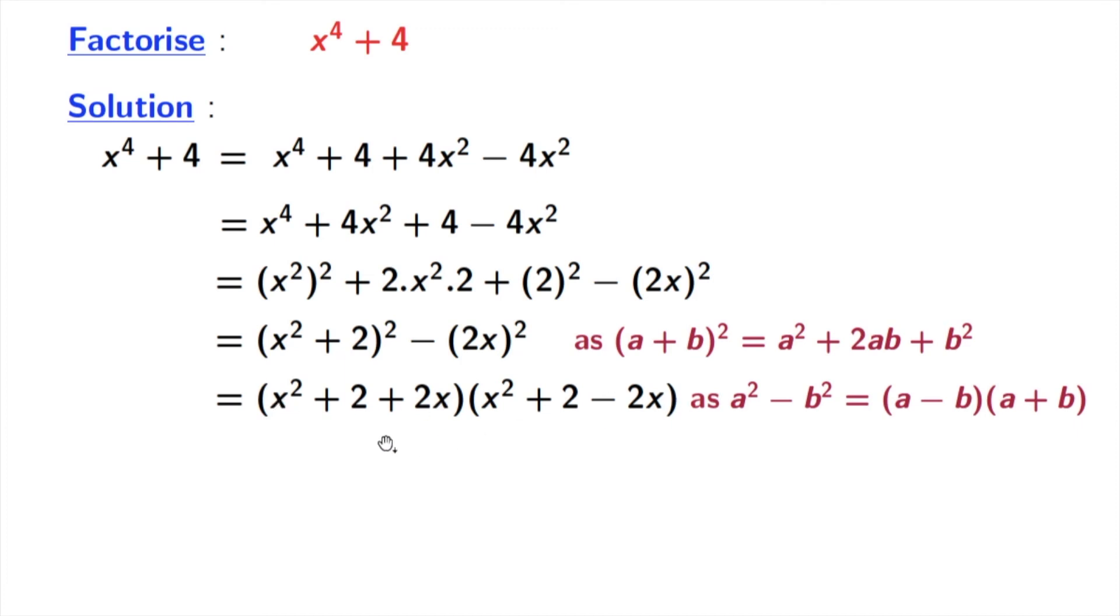Now rearranging this, we get x power 4 plus 4 equal to x square plus 2x plus 2 times x square minus 2x plus 2. This is our desired factorization. Well done!